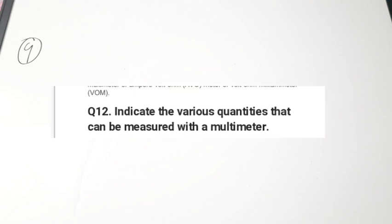The next question asks: what are the various quantities that can be measured with a multimeter? A multimeter can measure AC as well as DC current, AC as well as DC voltage, and resistance. With an external circuit, it can also be used to measure inductance and capacitance. Mainly, it measures voltage, resistance, and current.